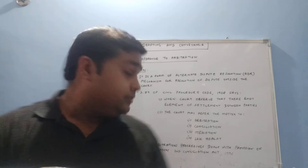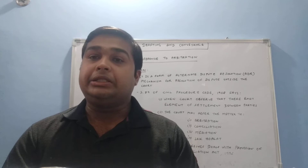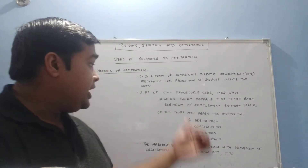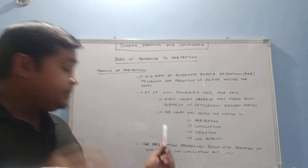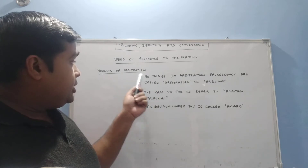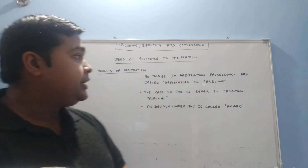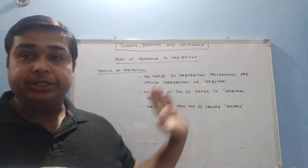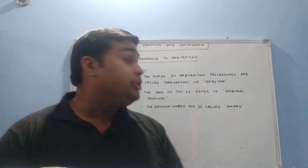The bare act of the Arbitration and Conciliation Act and the link for Section 89 of CPC are provided in the description of this video. Under arbitration proceedings, the judges are called arbitrators or arbiters. The case is referred to an arbitral tribunal, whereas in normal circumstances the case is referred to a court of correct jurisdiction.